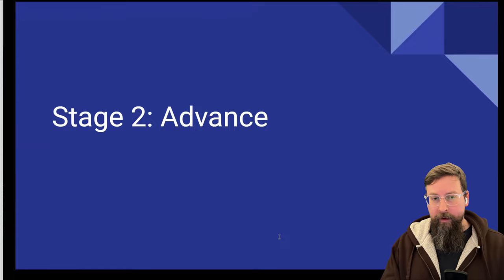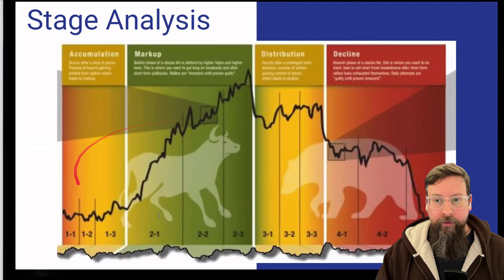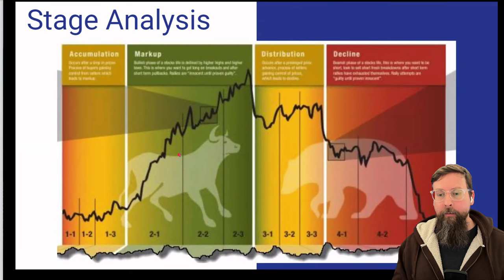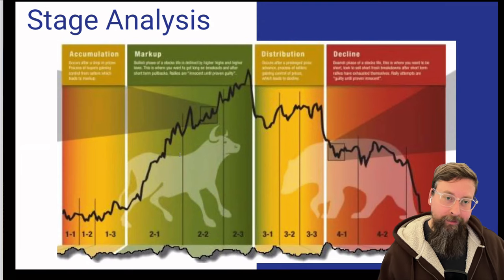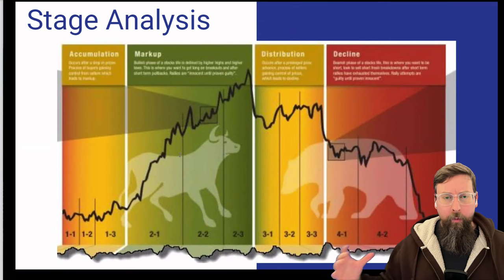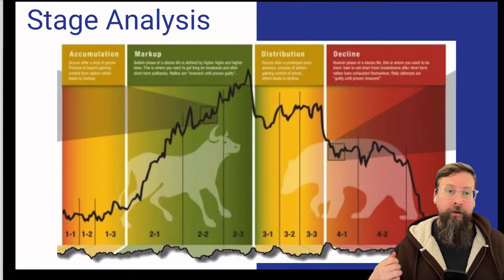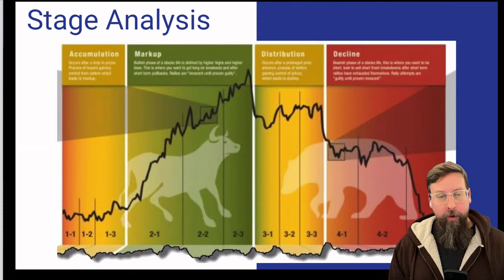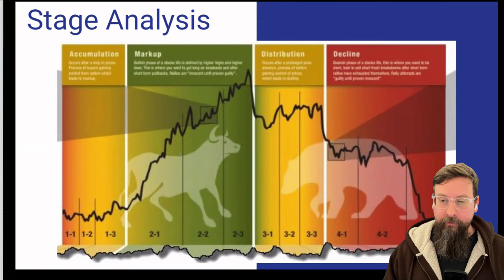Stage two — let's use MindMed as the same example. Stage two is often where you see the markup of prices. Generally speaking, the break from phase one into phase two has something to do with some sort of change in fundamentals. There is a news event, or in a drug company an FDA approval, or in the sense of something like NVIDIA you have AI as a story taking off, or Ozempic, or whatever it is — some sort of big change in the way people perceive this. Now is when you're going to start getting momentum traders and trend traders getting involved after this stage one breakout. You're looking for some sort of shift in fundamentals — it could be as simple as an earnings report — saying, hey, we are now in a new phase of the market.